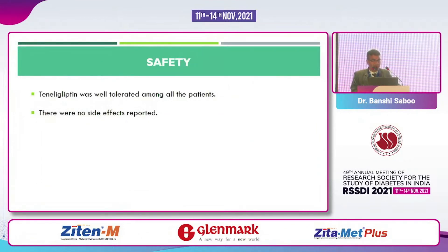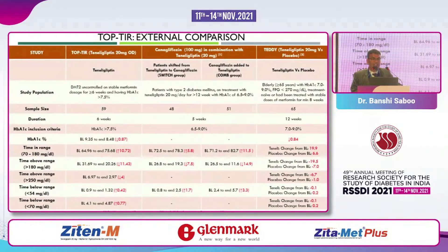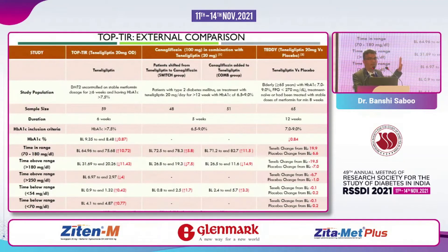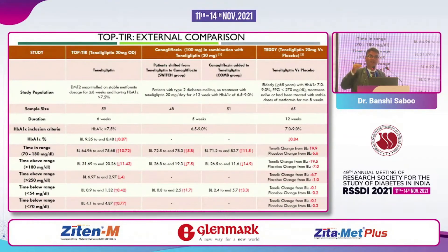Teneligliptin was well tolerated among all patients — no safety issues were reported in the clinical trial. For the TOP-TIR external comparison: this was a small study with 59 samples. It was compared with a canagliflozin combination — a switch group where 48 patients were shifted from teneligliptin to canagliflozin, and a combo group where canagliflozin was added to teneligliptin in 51 patients. We also compared with the TEDDY study, which compared teneligliptin with placebo.